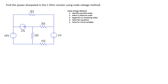Looking at the circuit, we can see that we have two ideal independent voltage sources, and note that the polarity here is different from the polarity here. We also have one ideal independent current source, and then there are four resistors.